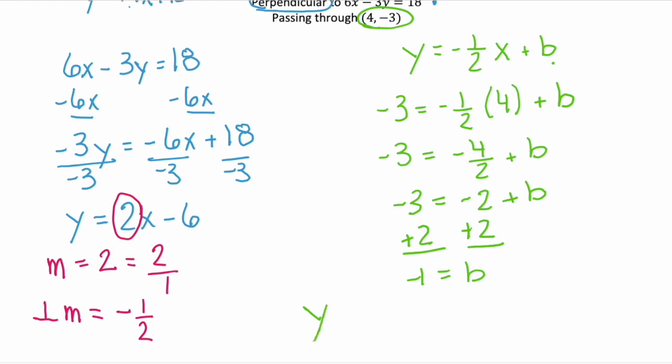So our final equation is y equals negative 1 half x minus 1. So this is the equation of the line that's perpendicular to that given line, 6x minus 3y equals 18, and it also passes through the point (4, -3).